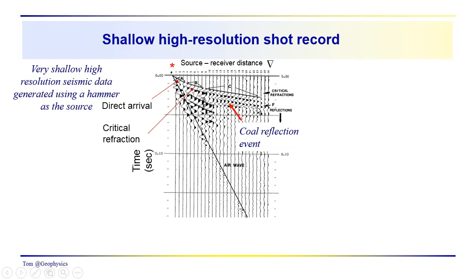And then these events which steepen at the longer offsets and become shallower at the nearer offsets are hyperbolic. It's a little bit difficult in this short record to see the hyperbolic nature of these reflection events. But this would be a reflection event from a coal seam in the subsurface. And this event is an air wave.